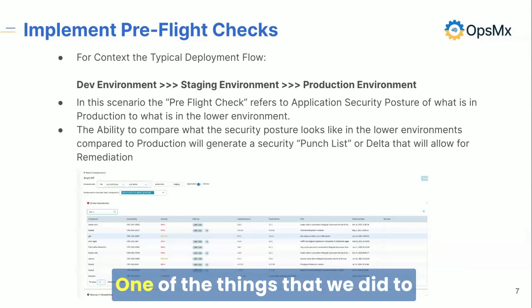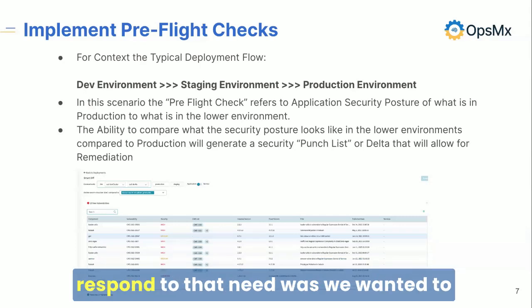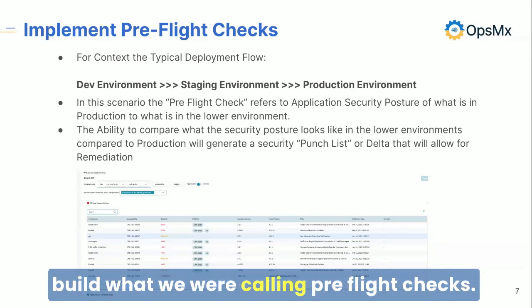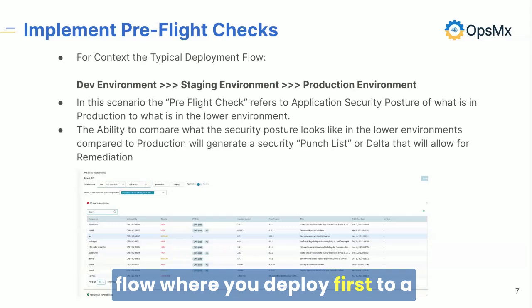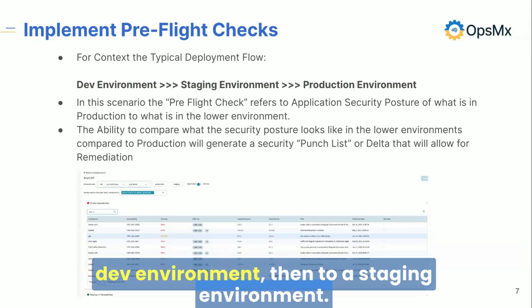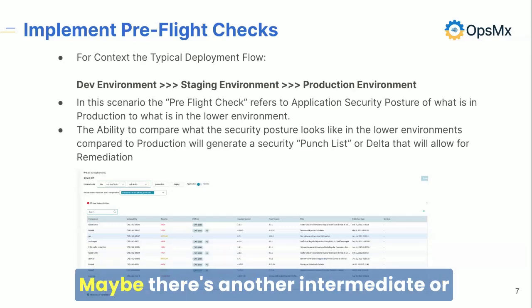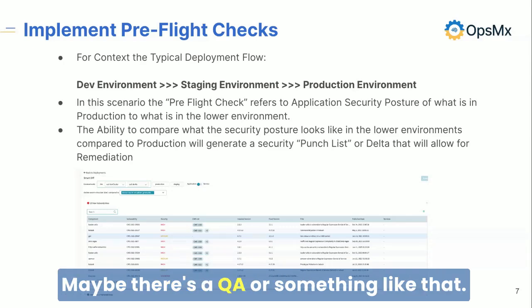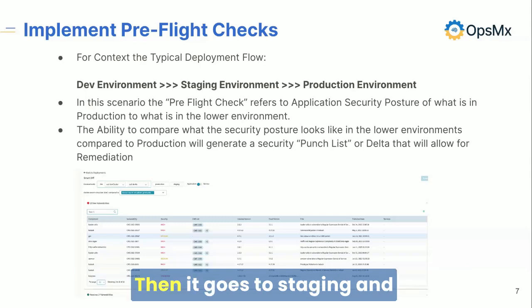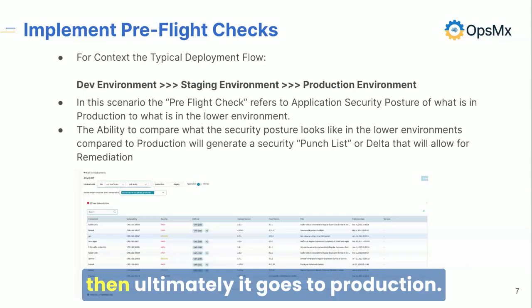One of the things that we did to respond to that need was we wanted to build what we were calling pre-flight checks. It's the typical deployment flow where you deploy first to a dev environment, then to a staging environment. Maybe there's another intermediate or lower environment prior to staging, like a QA environment. Then it goes to staging and ultimately to production.